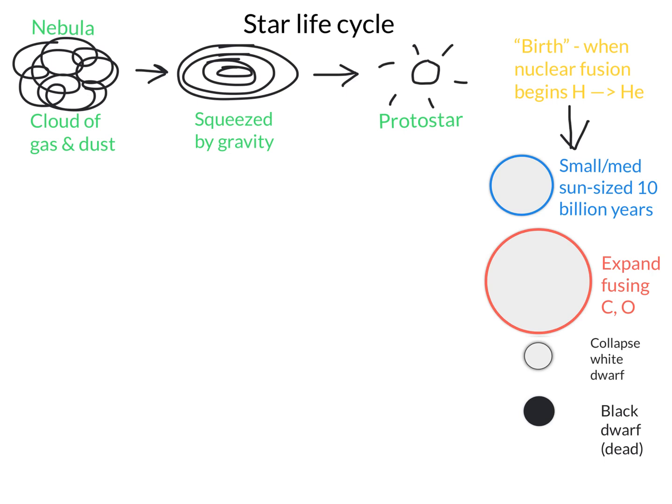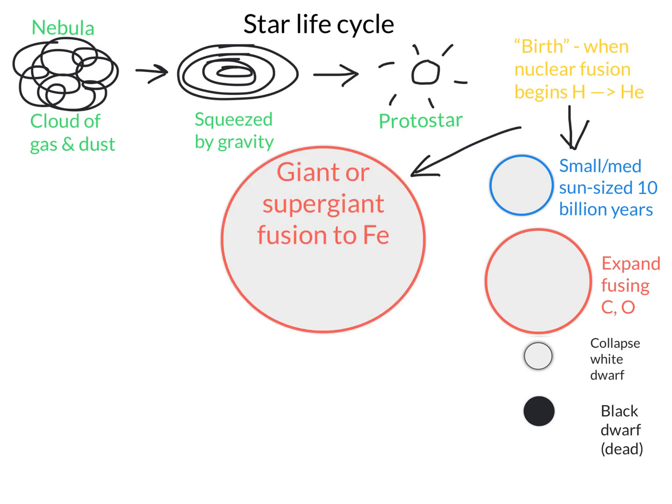This path is characteristic of relatively small to medium sized stars, but not every star is the same size. There's another path for larger stars. Stars that start out much larger — either as giant or supergiant stars — have a very different way that they actually die.